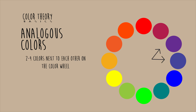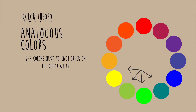There are also analogous colors, which are two to four colors next to each other on the color wheel. Examples include blue and purple, an orange-yellow grouping, and the green family of analogous colors. And all of those make up your color theory basics.